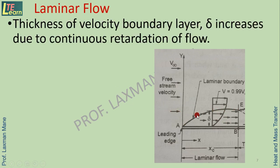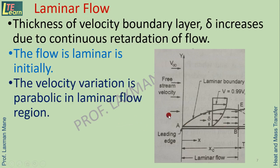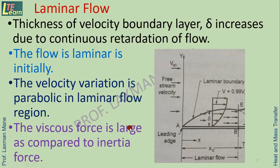The thickness of the velocity boundary layer delta increases due to continuous retardation — a reduction of flow — caused by viscosity. The viscous force is large compared to the inertia force, which is the reason for laminar flow and the laminar boundary layer.